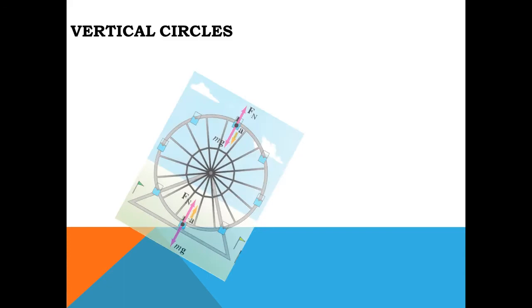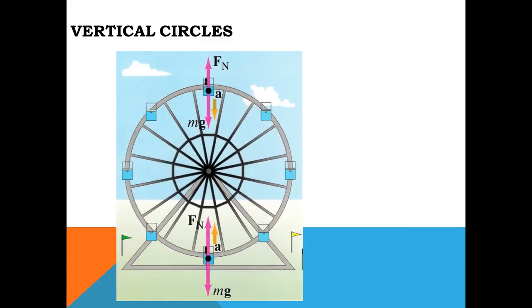Vertical circles: From here you can see F_N and this weight W. F_N is the normal force. F_C is equal to F_W minus F_N, and F_N is equal to mg minus mv squared divided by r.